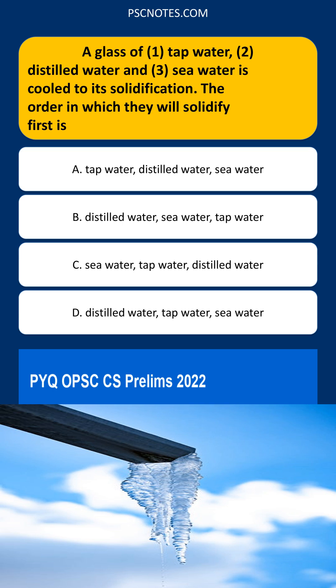The order in which they will solidify first is: tap water, distilled water, seawater.